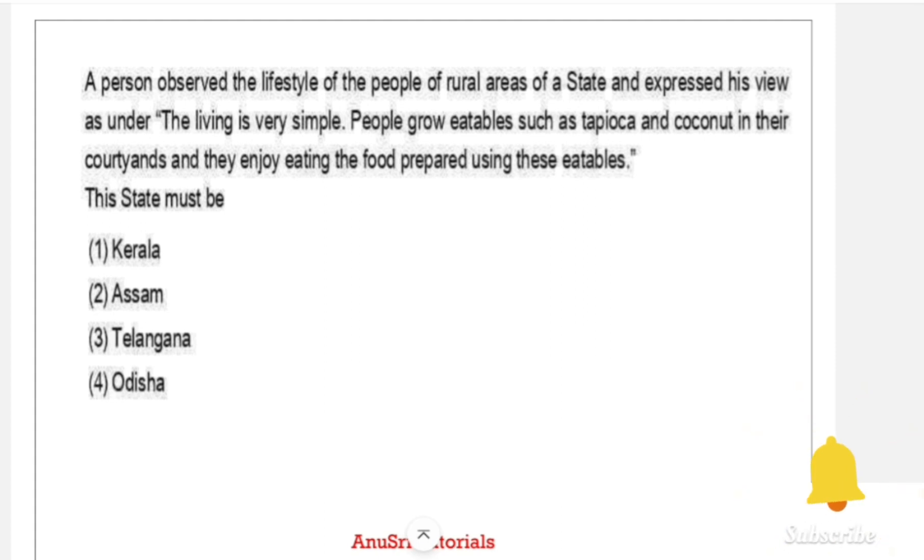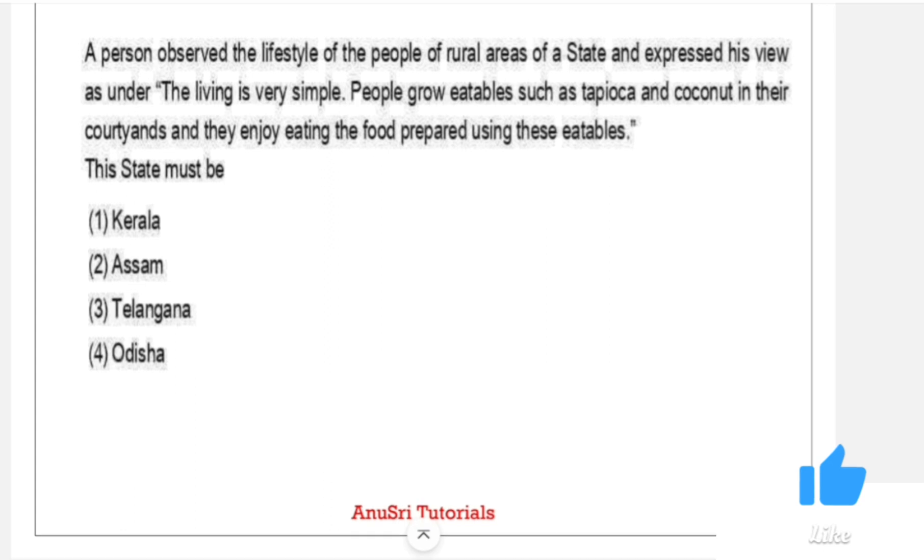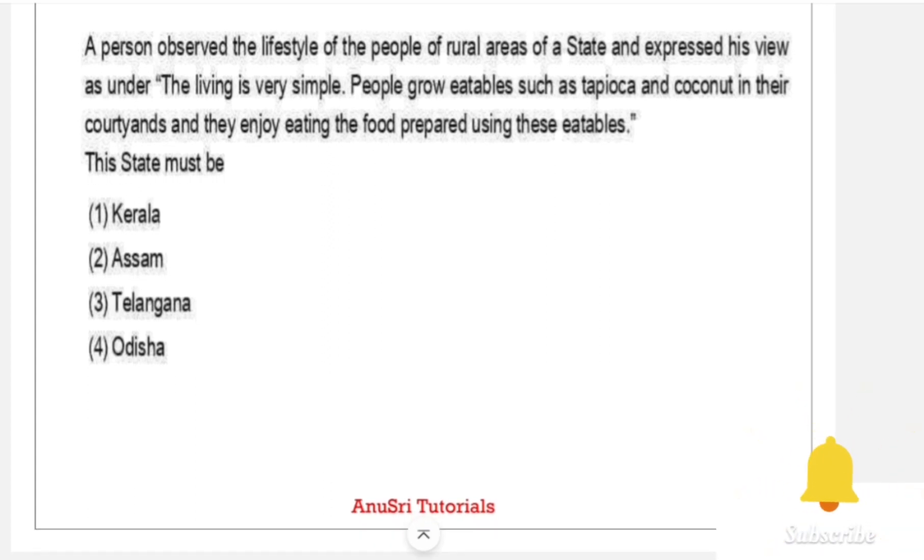A person observed the lifestyle of the people of rural areas of a state and expressed his view as under: the living is very simple, people grow eatables such as tapioca and coconut in their courtyards and they enjoy eating the food prepared using these eatables. Options are: 1. Kerala, 2. Assam, 3. Telangana, 4. Odisha.